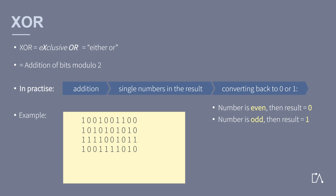First of all, we add the individual numbers of the bits up in the way we are used to, so all ones in a column are added. From the result, the individual numbers are now considered, and then we check whether the number is even or odd, resulting in a zero or a one. Also note that the usual symbol for this operation is A plus in a circle, meaning the calculation should be actually written down as shown.